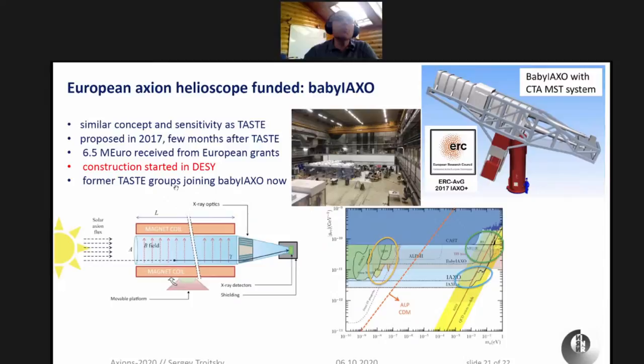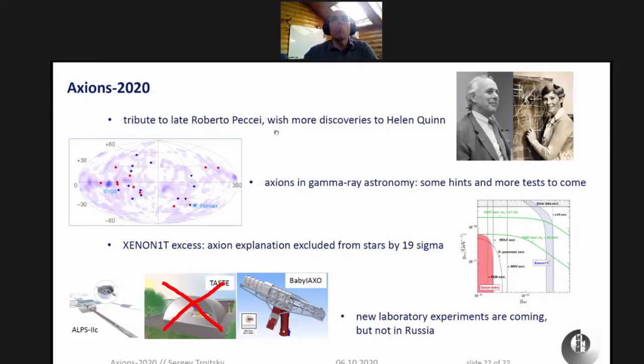Here is my summary. More discoveries to Helen Quinn, who is working, and last week she was giving a lecture on axions through Zoom. Tribute to and many thanks, including personal thanks, to Roberto Peccei who left us this year. There are some interesting activities in gamma ray astronomy and some hints to possible indications to axion-like particles here, and more tests to come. The XENON1T excess is probably not related to axions because the axion explanation is excluded from stellar evolution by 19 sigma. There are new laboratory experiments coming, unfortunately not in Russia. Thank you very much.